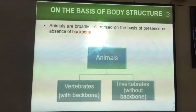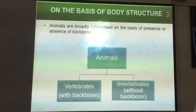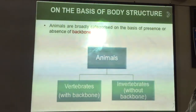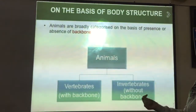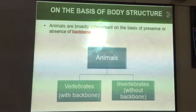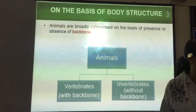Hello students. We will continue with the same chapter and now we will discuss the classification of animals. On the basis of their body structure, animals are broadly divided into two categories: vertebrates and invertebrates. Vertebrates are those animals in which a backbone is present, and invertebrates are those animals in which backbone is absent.